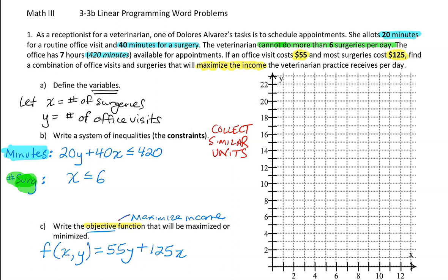We also have one more constraint: the number of office visits must be greater than or equal to zero, simply because you can't have negative office visits. So those are our three constraints, and we're going to graph them.